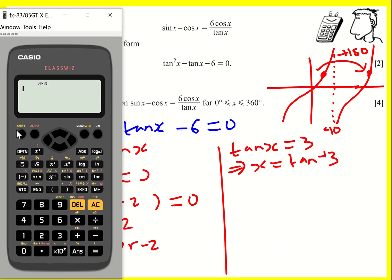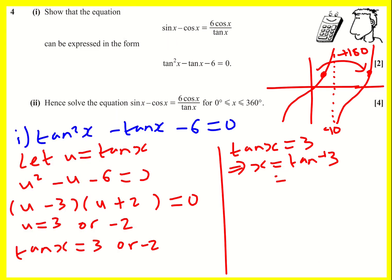So it's going to equal inverse tan 3. Let's just work out what that is, actually. 71.565. Or 71.565 plus 180.